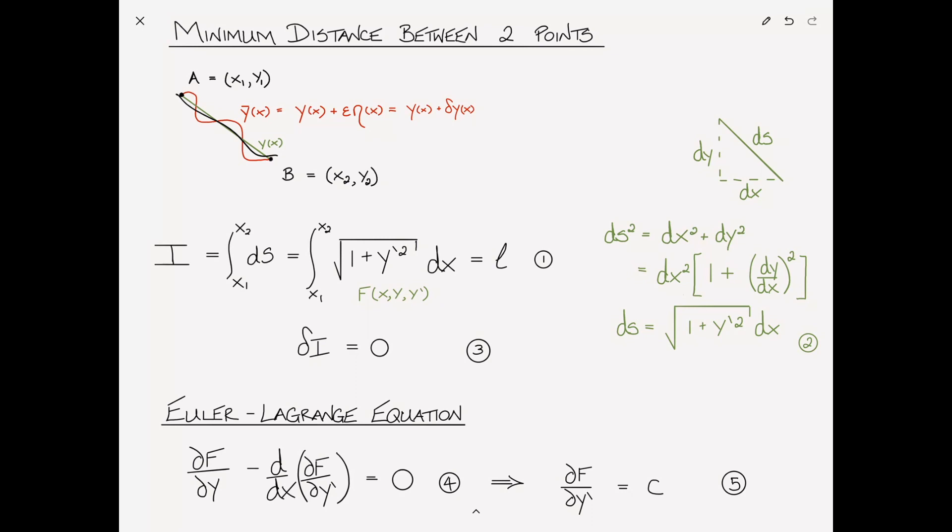So that the actual path is y*, we decided let's look at a varied path which we drew in red. Previously shown that in order for i, which in this case is the length of the path, in order for the length of the path to be a stationary point,